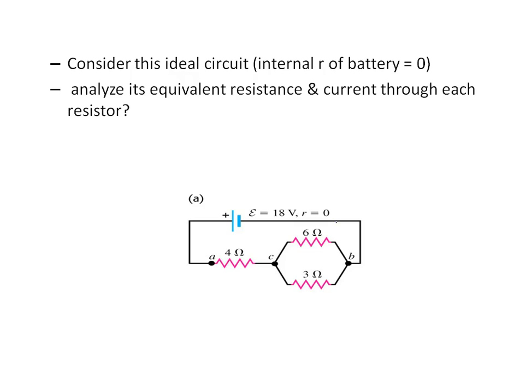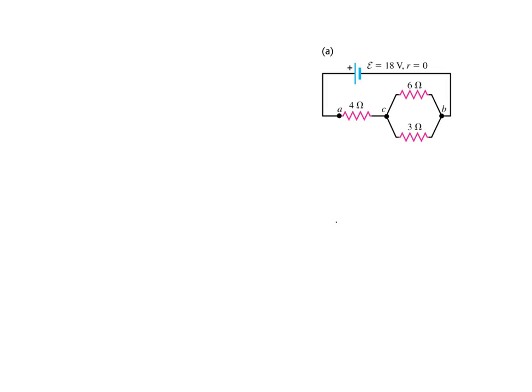Pause the video and solve yourself. In this circuit, 6Ω and 3Ω are in parallel, so they can be converted to 2Ω. Using the parallel formula: (6 × 3)/(6 + 3) = 18/9 = 2Ω.